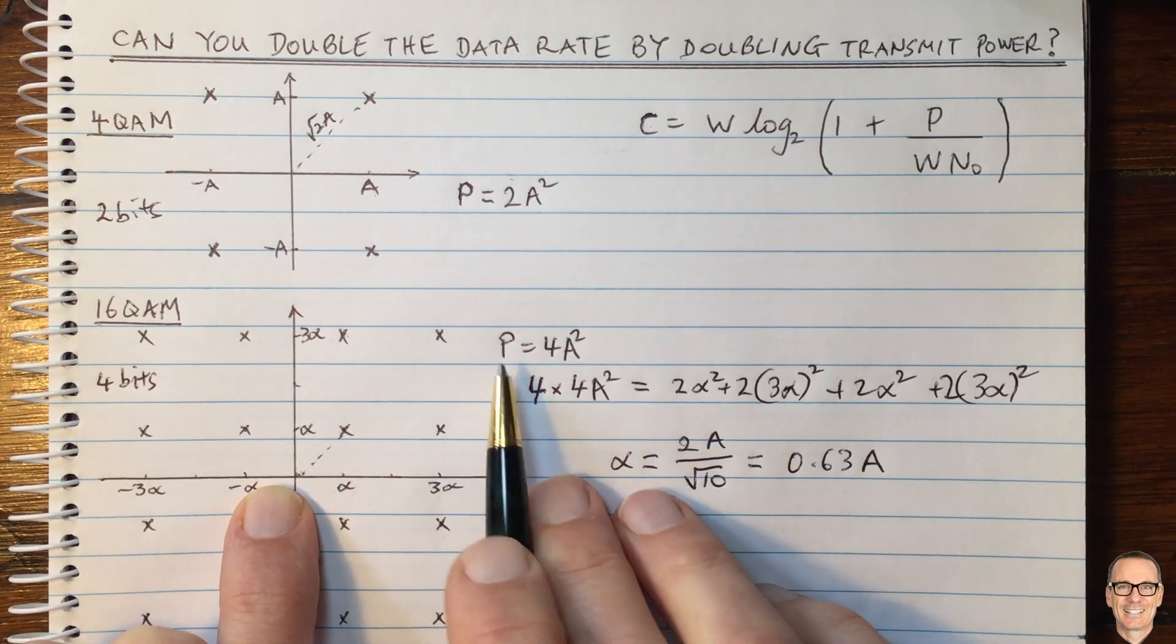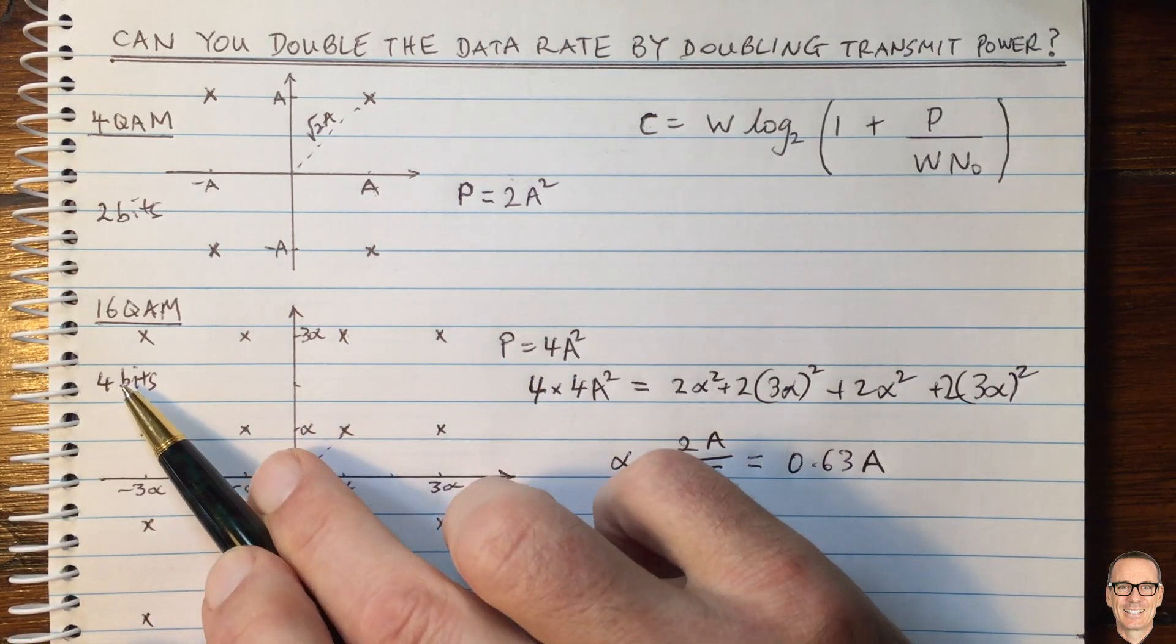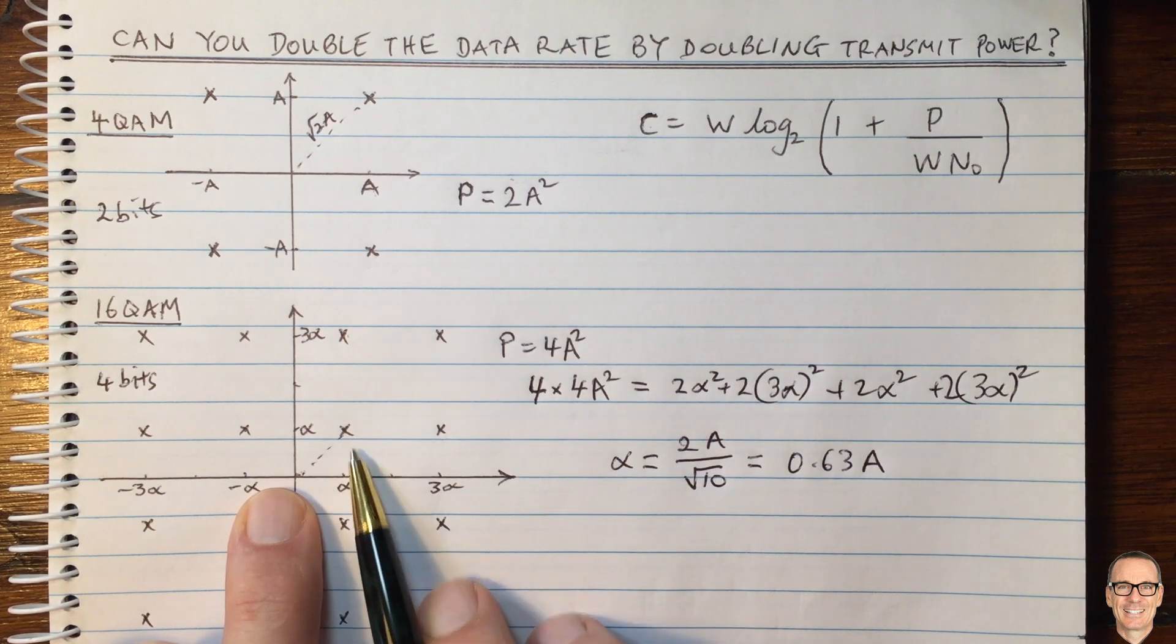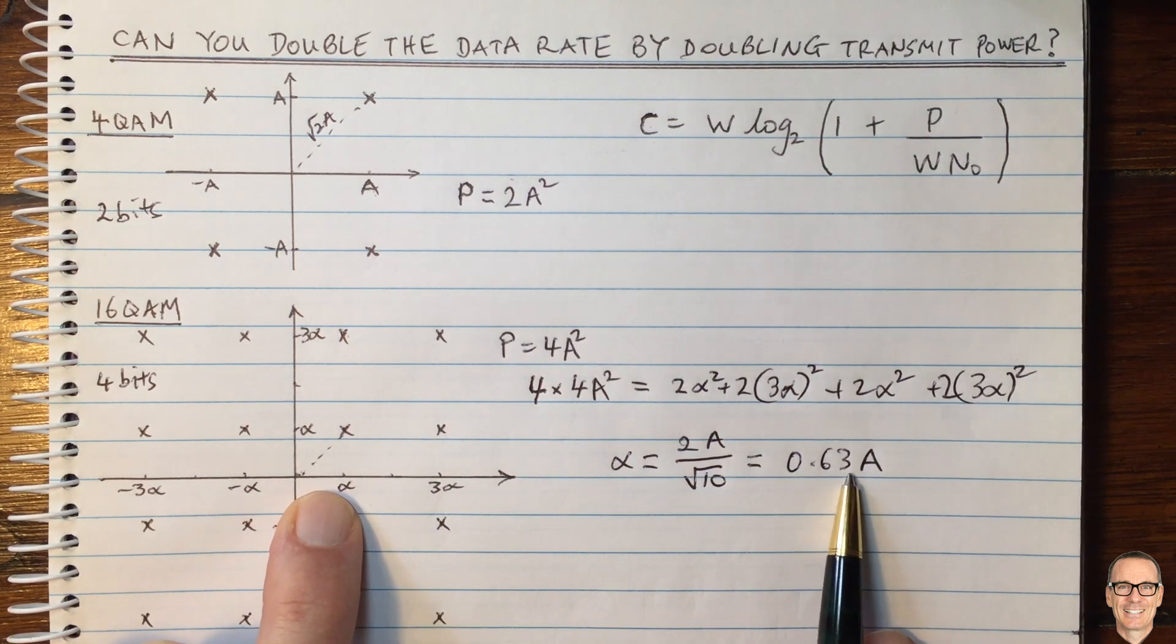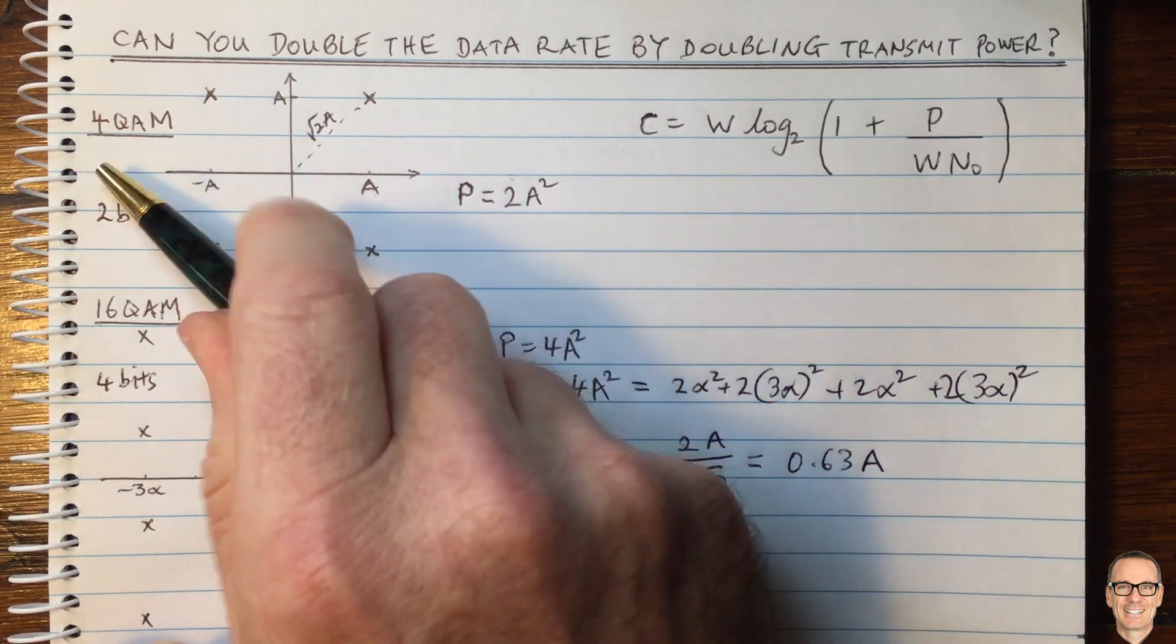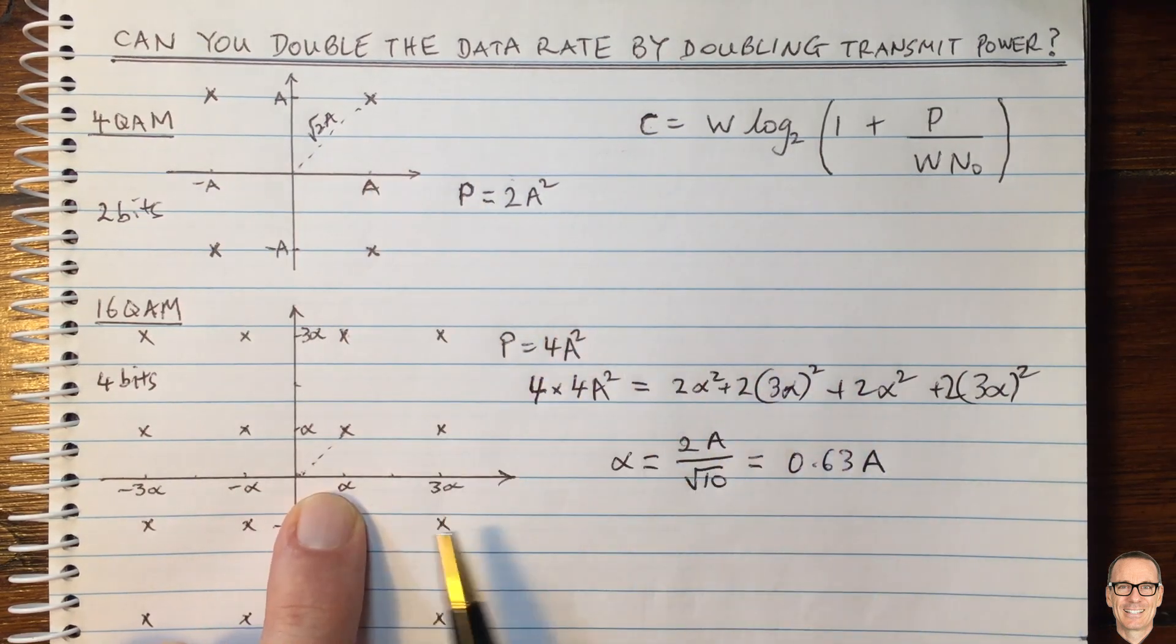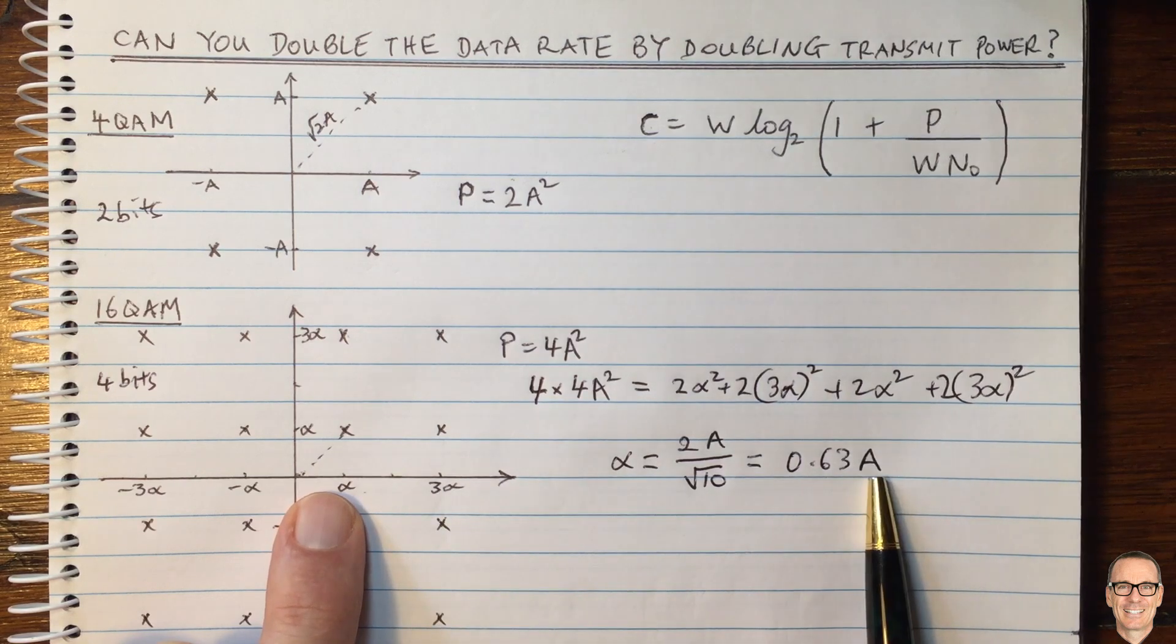So in this case here, where we've got double the power and double the number of bits, the constellation points are located at 0.63a. Whereas for 4QAM, they were at a plus and minus a. So now they are closer together.